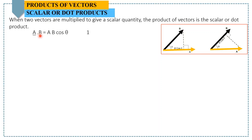The scalar product is also called dot product because of the dot notation that indicates it. Consider two vectors a and b, and place both tail to tail. In the first figure, there is an orthogonal projection of vector b in the direction of vector a, so we can write mathematically: a dot b equals a times b times cosine of theta.